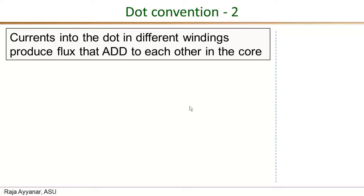We come to the second rule, the dot convention 2, which is related to the contribution to the core flux from the currents in each of the different windings. The rule states that currents entering the dot in various windings produce flux that adds in the core. So if all the windings have currents entering the dot, their fluxes add in the core.